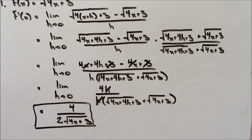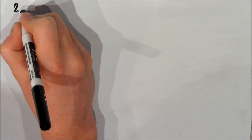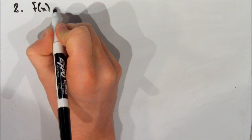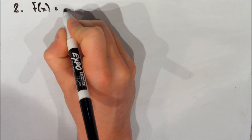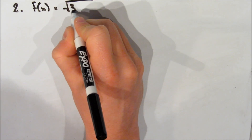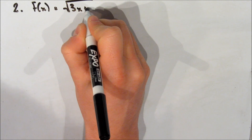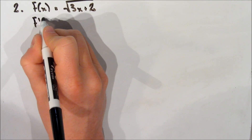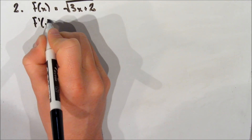If we want to find the slope of the tangent line at any point, we just substitute in the x-coordinate of that point into our answer. Before the second example, I recommend you pause the video, try it on your own, and then check if you're right.